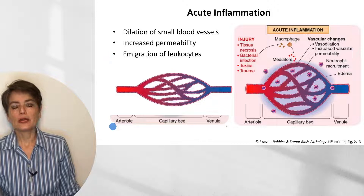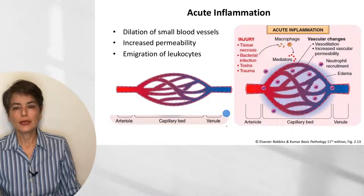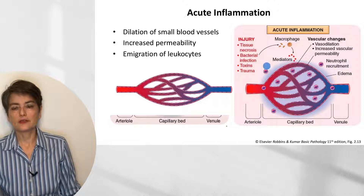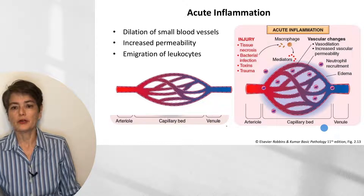I'm going to show this in the context of a figure from Robbins and Kumar Basic Pathology, 11th edition. In healthy vasculature we have our arterial, capillary bed, and postcapillary venule. In acute inflammation due to tissue necrosis or bacterial infection, we get elaboration of mediators causing vasodilation — these vessels are larger in diameter. We get increased vascular permeability, with more space between endothelial cells, allowing fluid to leave, leading to edema, as well as neutrophils exiting.